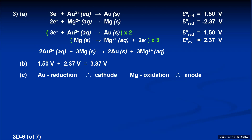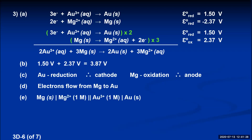Part D: which way do the electrons flow — from gold to magnesium or magnesium to gold? Looking at the half reactions: magnesium turns into magnesium 2+ ions and releases electrons, so magnesium gives up electrons that go to the gold ions. The electrons flow from magnesium to gold. For the line notation: write the anode (magnesium) first, one line, then the magnesium 2+ solution at one molar, two lines, then the gold 3+ solution, one line, then gold solid as the cathode.